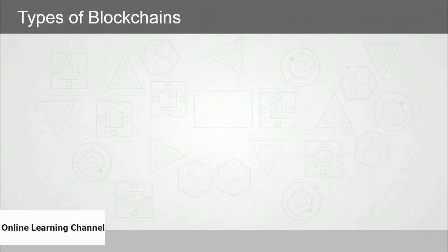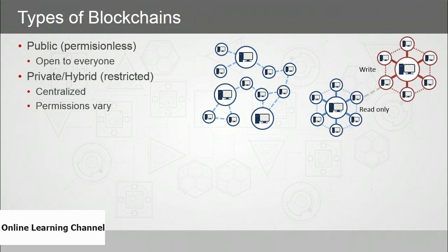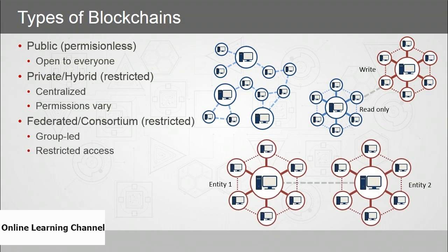The types of blockchain: first, public or permissionless — open to everyone. Next, private or hybrid — restricted, still decentralized but with access control; permissions can vary with some users having write access and others read-only. Then federated or consortium — also restricted, group-led, typically run by organizations in the same industry banding together. And finally, public permissioned — just like a public blockchain except you require an invitation and must provide credentials to sign up.